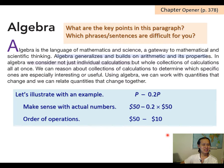So then the next sentence says, in algebra we consider not just individual calculations, but whole collections of calculations all at once. So what is the author trying to communicate? What do we mean by not just individual calculations? What are individual calculations? Let's see if we can make sense of it.